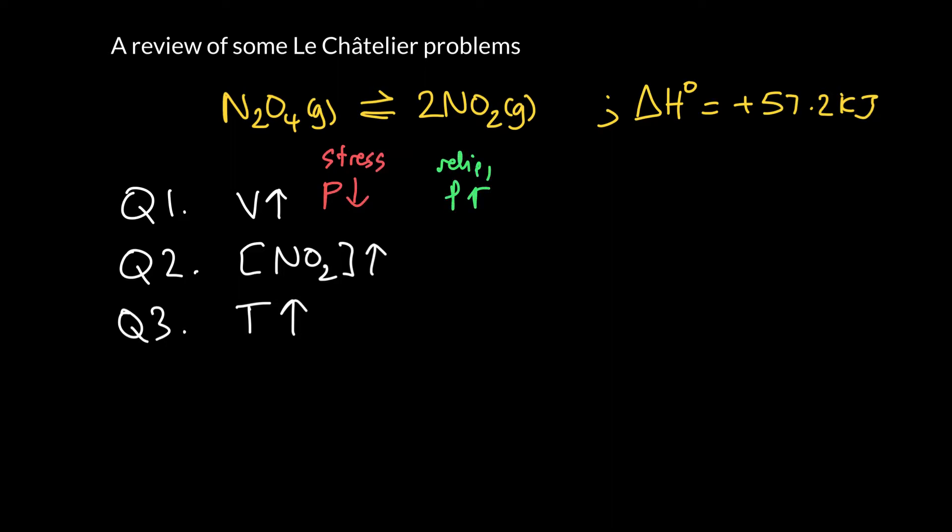So which way does the equilibrium shift in order to increase the pressure? We need to make more gas molecules. We're going to cause a shift from the left to the right-hand side, a right-hand side shift.